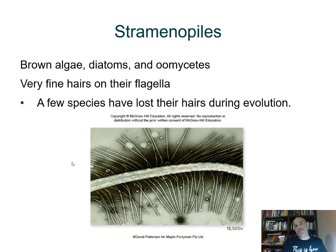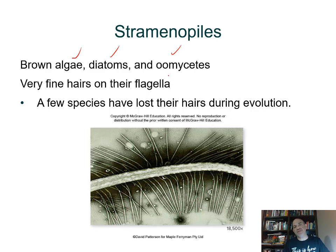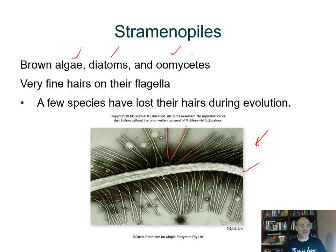The stramenopiles include brown algae, diatoms, and oomycetes — sometimes called water molds, even though they're not considered fungi. One thing they have in common — and where the group gets its name — is this electron micrograph showing hair-like or straw-like structures on the flagellum. 'Stramenopile' roughly translates to 'straw' or 'hair-like structures.' Their flagella have this unique feature, and you'll see it in drawings of brown alga life cycles.